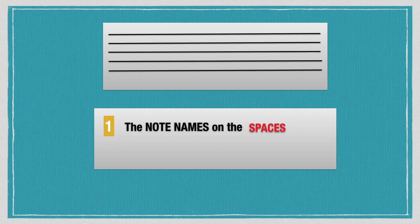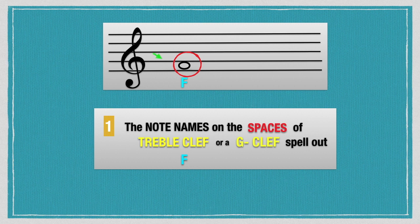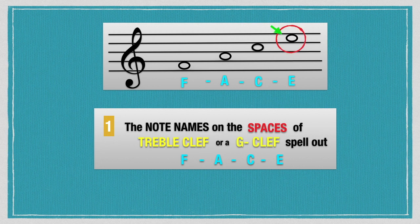The note names on the spaces of the treble clef or the G clef spell out as F on space 1, A on space 2, C on space 3, and E on space 4.